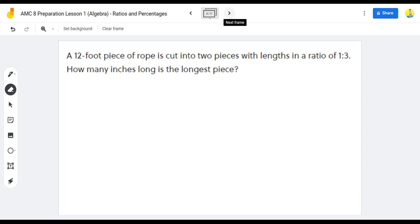Problem number 1. A 12-foot piece of rope is cut into two pieces with lengths in a ratio of 1 to 3. How many inches long is the longest piece?